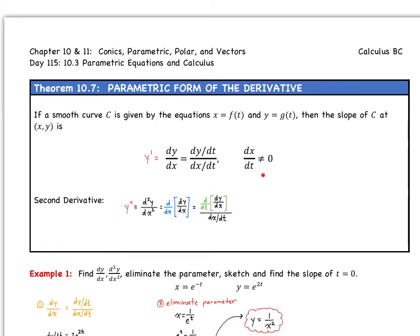This holds so long as dx/dt does not equal zero. For the second derivative, y double prime — also written as d²y/dx² — is the derivative of dy/dx. Specifically, we take the derivative with respect to t of dy/dx, then divide by dx/dt. That denominator stays as whatever dx/dt is.